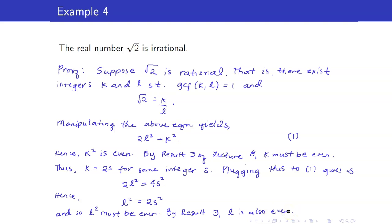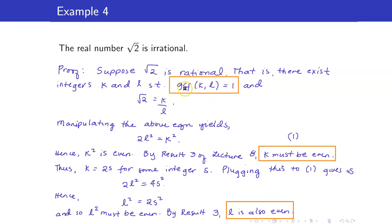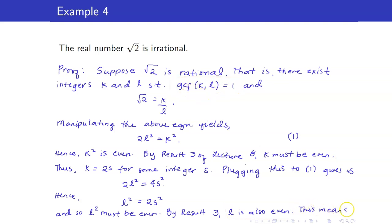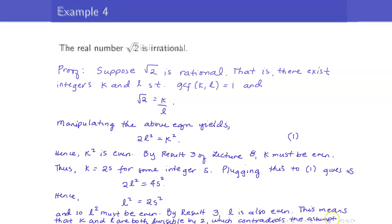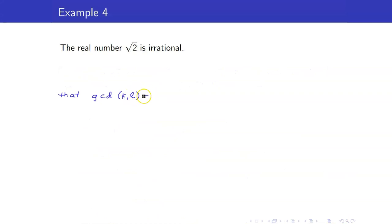Can you already see the contradiction? We have K is even and L is even, which means both are divisible by 2. This contradicts the fact that they have no common factor. Since we have found a contradiction, therefore √2 must be irrational.